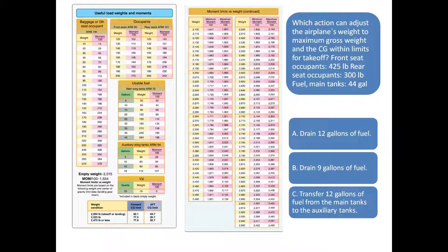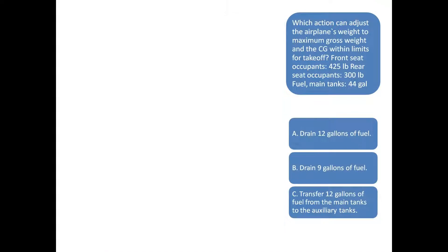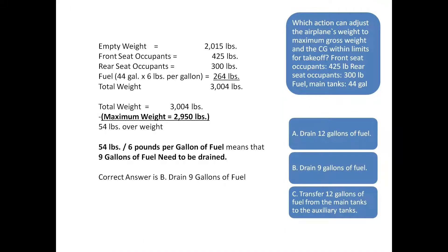Refer to the weight and balance tables on the left. Which action can adjust the airplane's weight to maximum gross weight and the center of gravity within limits for takeoff? The weights are 425 pounds for the front seat occupants, 300 pounds for the rear seat occupants, and 44 gallons of fuel in the main tanks. The empty weight of the airplane is 2,015 pounds and the max allowable weight is 2,950 pounds. Add the empty weight of 2,015 pounds plus the weight of the front and rear seat occupants and fuel to get the total weight of 3,004 pounds.